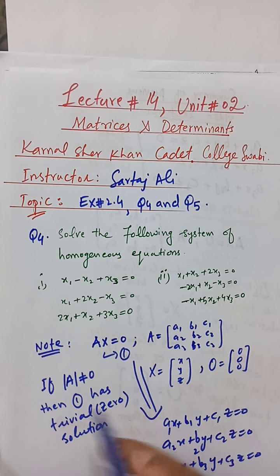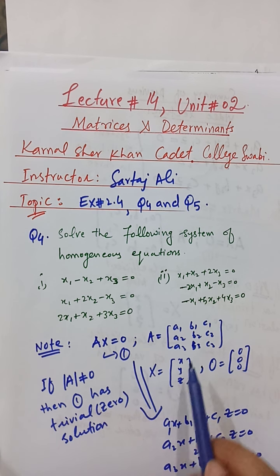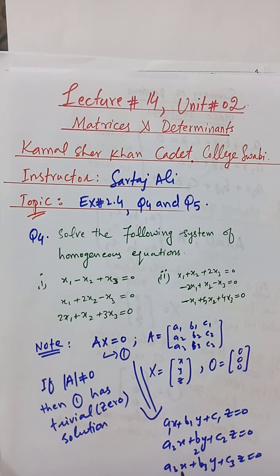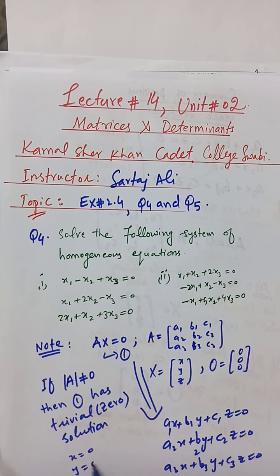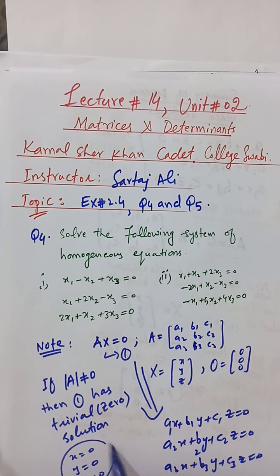So if the determinant of A is not equal to zero, meaning A is non-singular, then this system has a trivial solution — meaning x = 0, y = 0, and z = 0 will satisfy these equations.